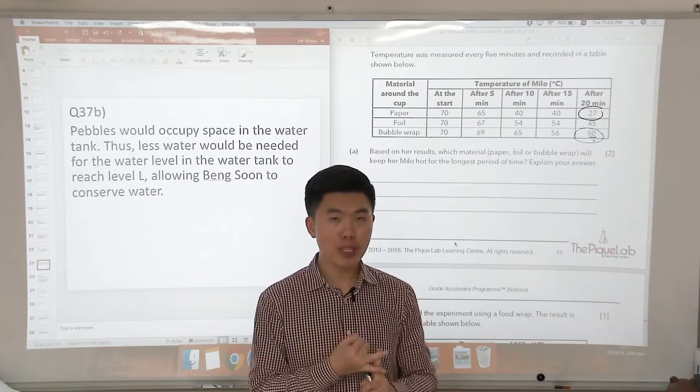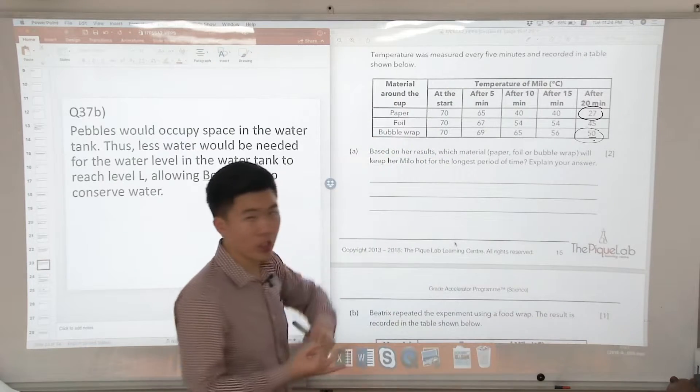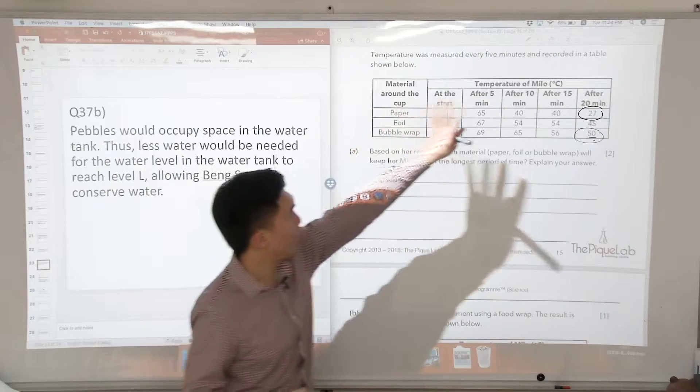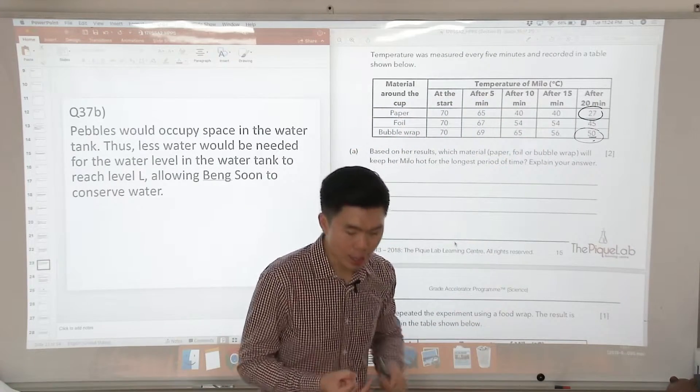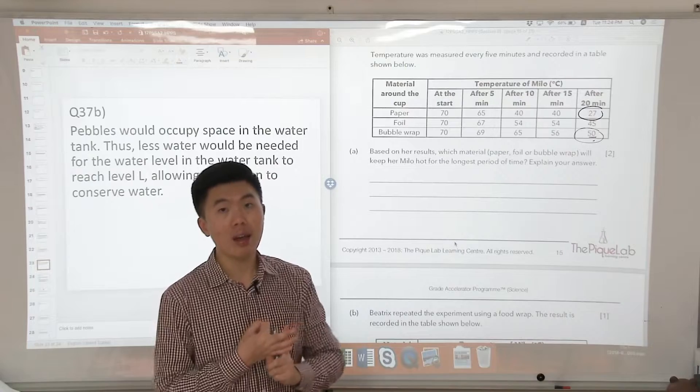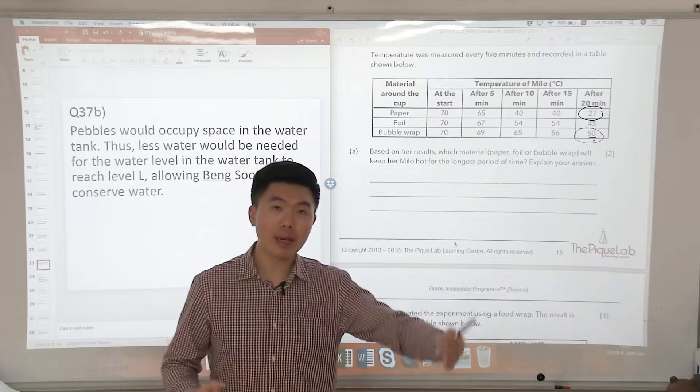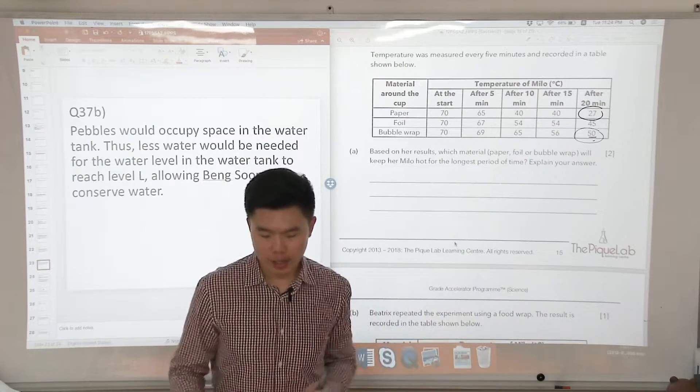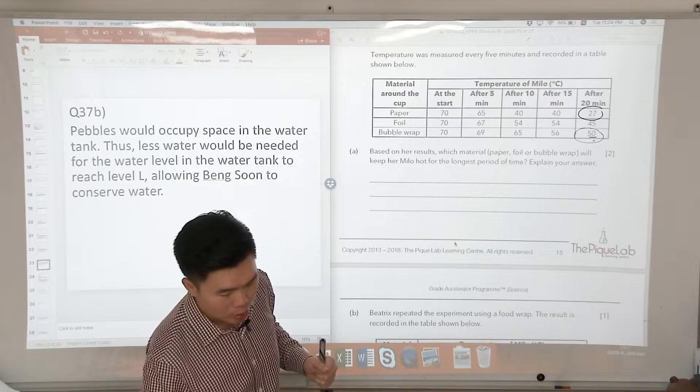C stands for choose. U means use the data, the evidence in the question. In this case, I will talk about the temperature of the Milo after 20 minutes. And then the last one is the explanation, which means that we must link it to the science concept. So I'm going to show you the answer.